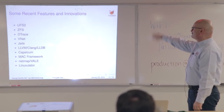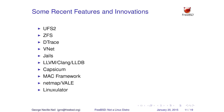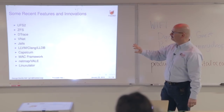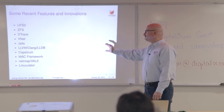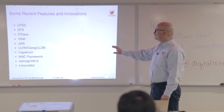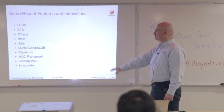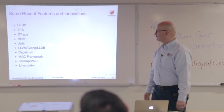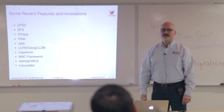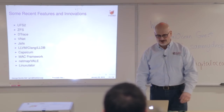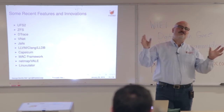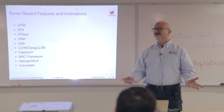Some recent things. FFS or UFS was mentioned. UFS and ZFS are the two major file systems. DTrace is my absolute favorite feature of the last few years. VNet jails, new compilers, a bunch of security stuff. And we can run Linux binaries — this thing called the Linuxulator. If you want to run a Linux binary on FreeBSD, you can do that. Someone just ran Doom recently inside the Linuxulator, which is the ultimate test.